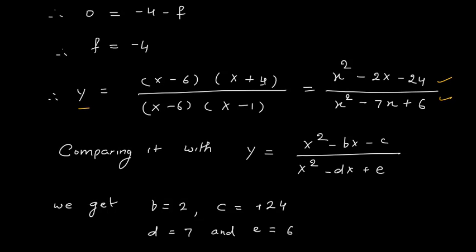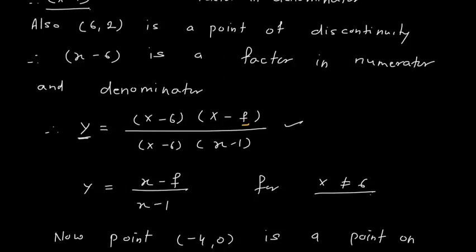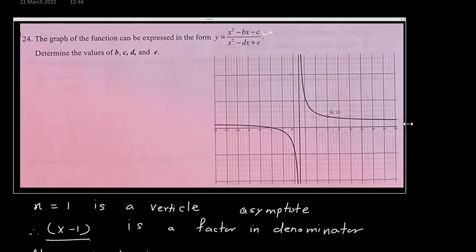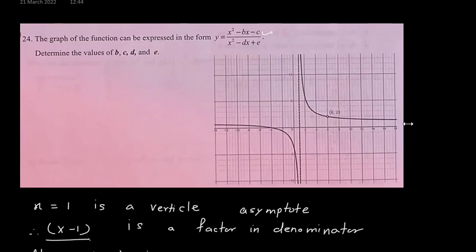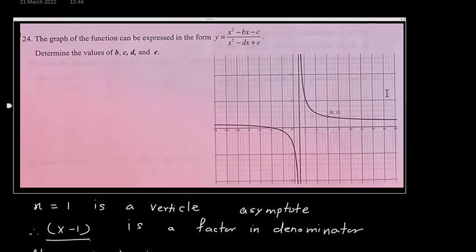So the function becomes y = (x-6)(x+4) / [(x-6)(x-1)]. Opening the brackets, in the numerator I get x² - 2x - 24, and in the denominator x² - 7x + 6. Comparing with y = (x² - bx - c)/(x² - dx + e), I get: b = 2, c = 24, d = 7, and e = 6. This is how we find unknown coefficients when the graph is given. I hope you understand — see you in the next class. Thank you.